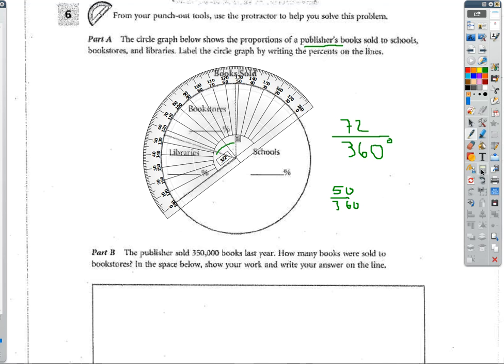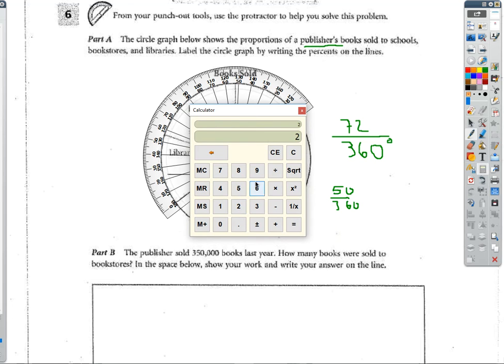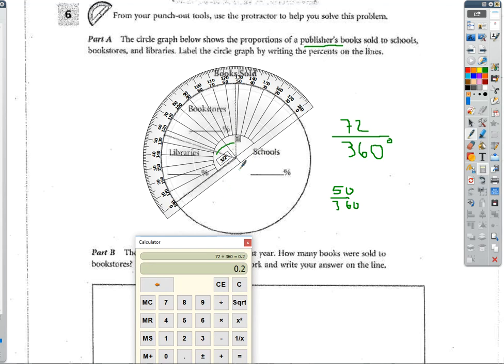So then I'm going to pull my calculator out and do 72 divided by 360. And I get 20%. Wonderful.